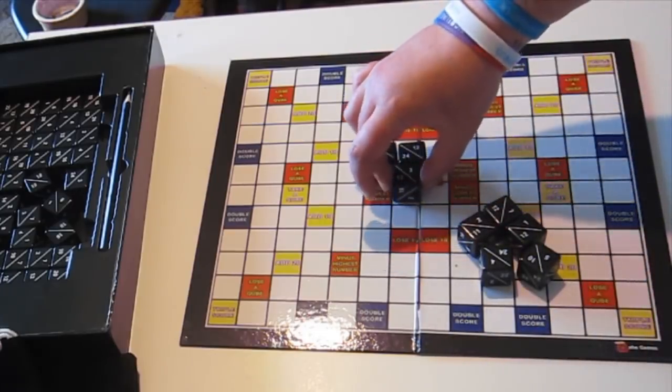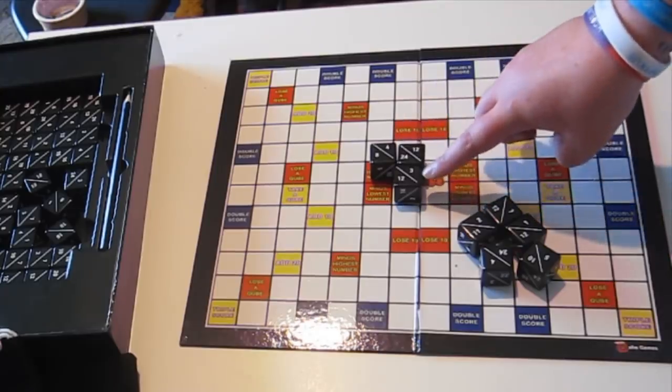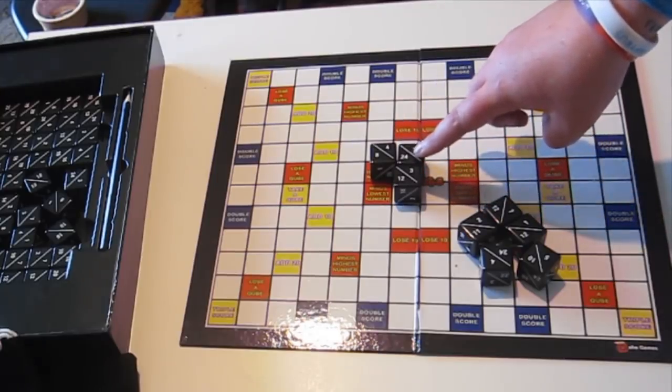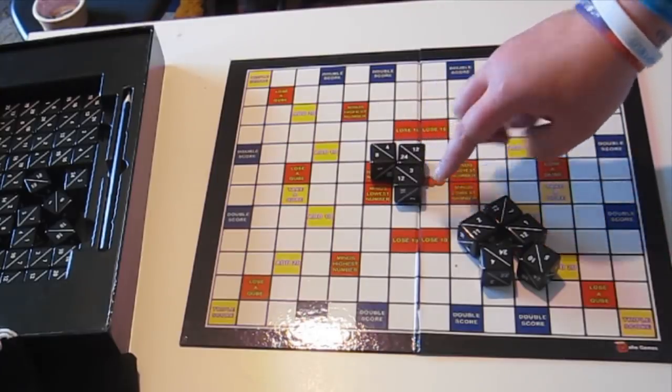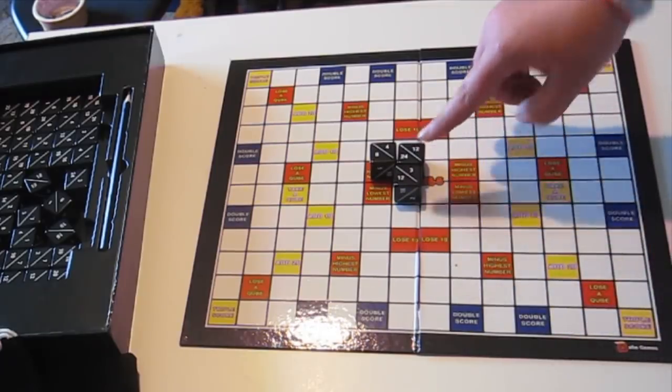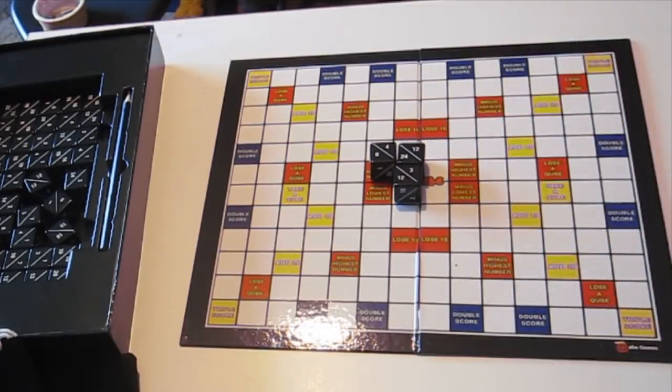I'm gonna put my three here and that's because three goes into 24 by 8, and 24 divided by 8 is 3. So then I would gain 3 plus 24 points which would make my score 27. I would write that down and it goes on to the next player.